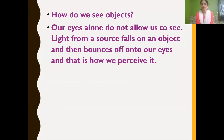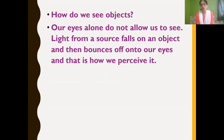Then how do we see objects? Our eyes alone do not allow us to see. Light from a source falls on an object and then bounces off onto our eyes, and that is how we see or perceive objects.